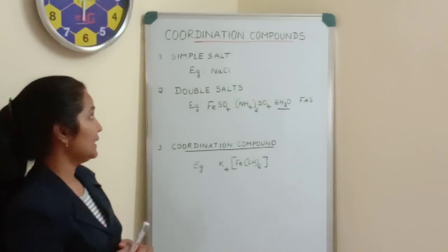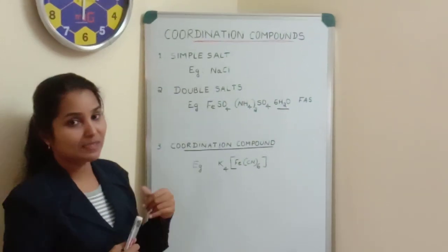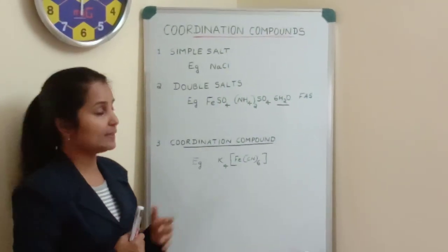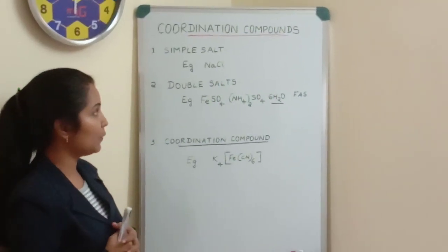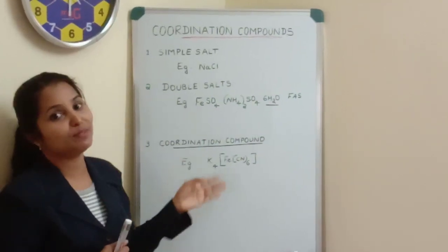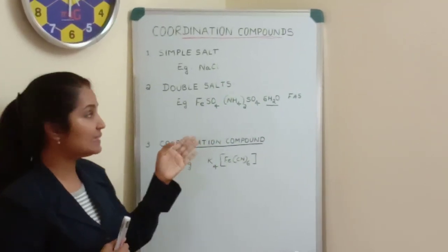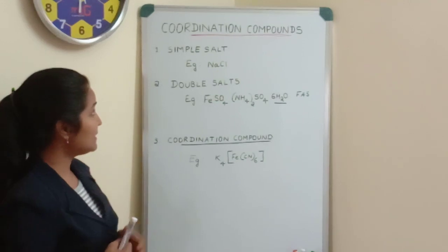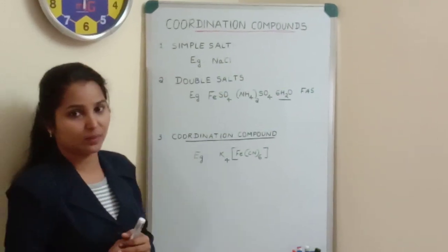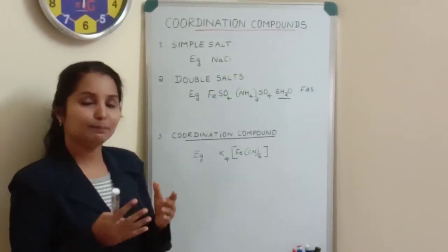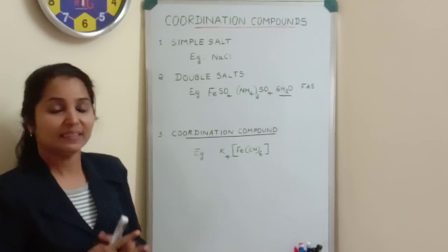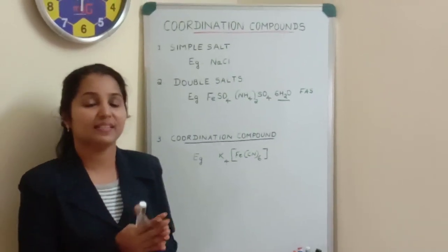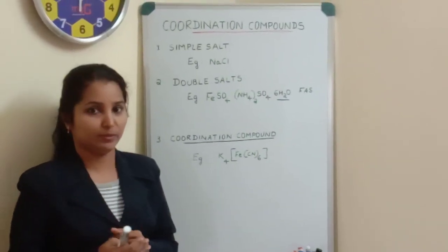First we will see what is a simple salt, what is a double salt, and what is a coordination compound, and what is the basic difference between all these three types of compounds. A simple salt is a chemical compound that contains a relative number of cations and anions.